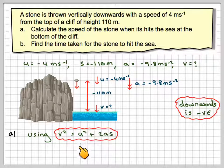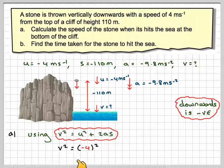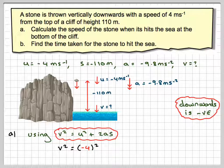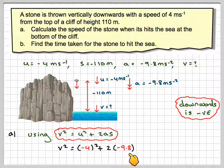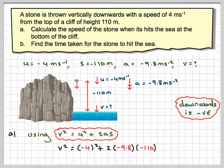So using v² = u² + 2as. We can have that v² is (-4)². Again, put this into brackets and then square it. Don't make this come out to be -16. 16 + 2 × (-9.8) × (-110).